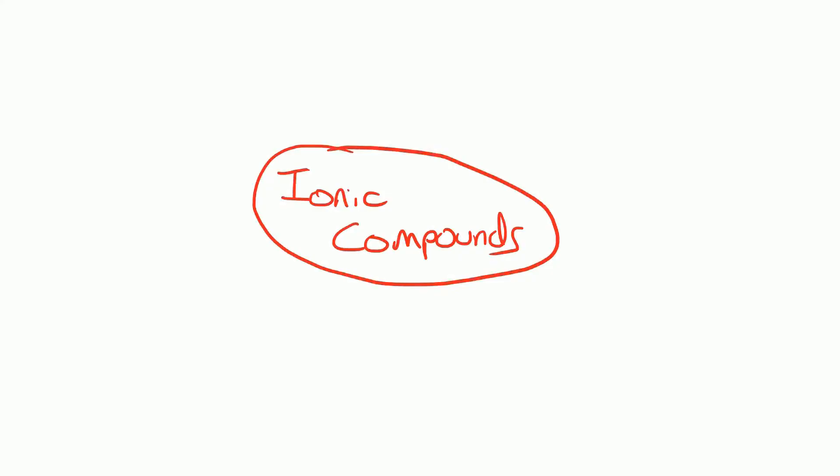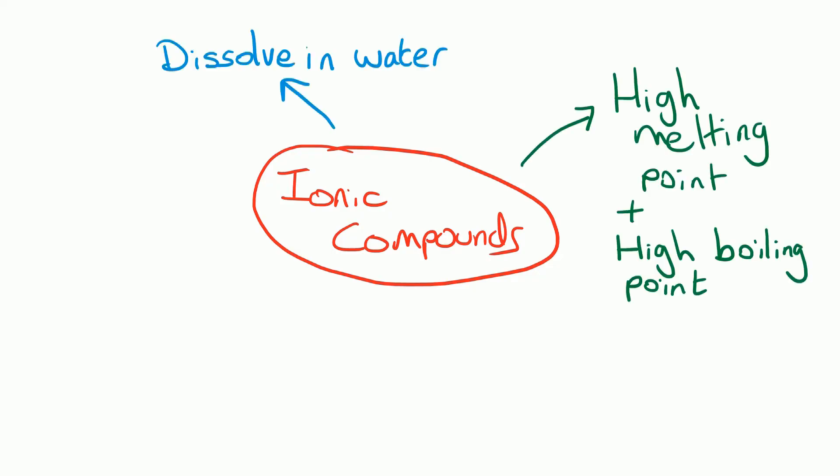Let's summarize what we know about ionic compounds. Remember, the ions are held together in a giant ionic lattice by those strong electrostatic forces of attraction. So in terms of their properties, ionic compounds dissolve in water. They have a high melting point and high boiling point. And that's because the ions are held in place by strong electrostatic forces of attraction. And those strong forces need a lot of energy to break them.